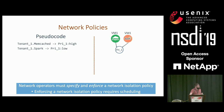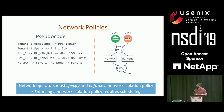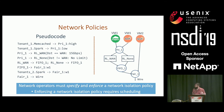A network operator wants to specify a high-level network policy for isolating applications. For two applications in VM one, Memcached traffic is given higher network priority over Spark traffic via a priority scheduling node. We also apply a 15 gigabit per second rate limit if traffic is destined for the WAN, otherwise leaving it unrate-limited. Adding VM two, the operator decides to fairly share traffic between VM one and VM two. Enforcing this network policy comes down to enforcing a packet schedule.